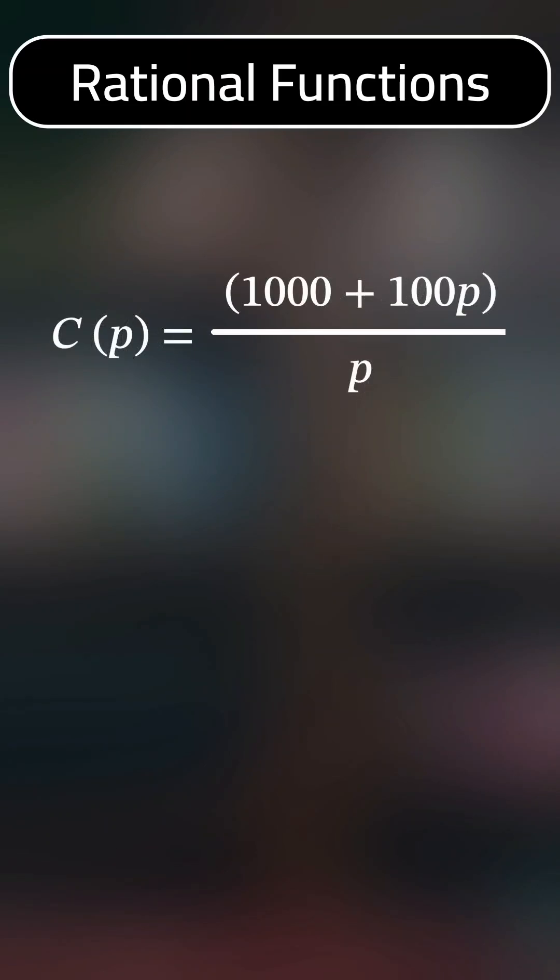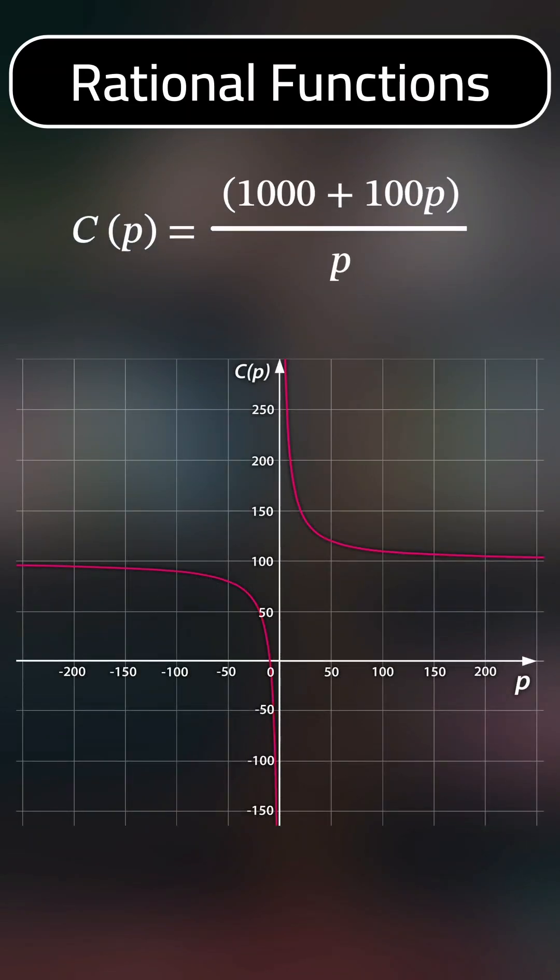For example, this rational function may describe the cost per person for a group tour. Using this function, we can plot a graph to show how the cost per person changes as more people sign up.